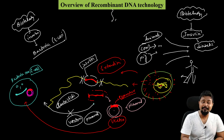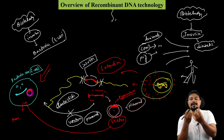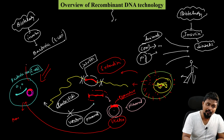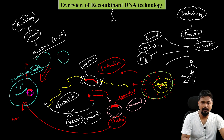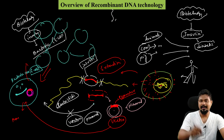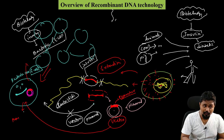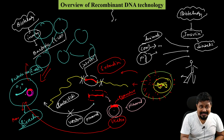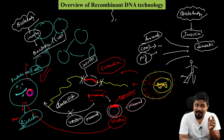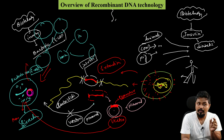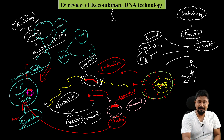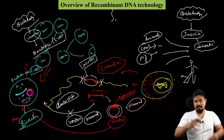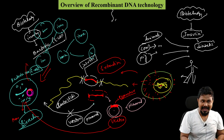The next step is to introduce this vector carrying the insulin gene into the bacterial cell. Then we need to maintain proper conditions — temperature, humidity — so the bacteria can multiply. As the bacteria multiply from one to two to four and so on, we culture them in a bioreactor. Inside the bioreactor, the bacteria begin producing insulin from the insulin gene.